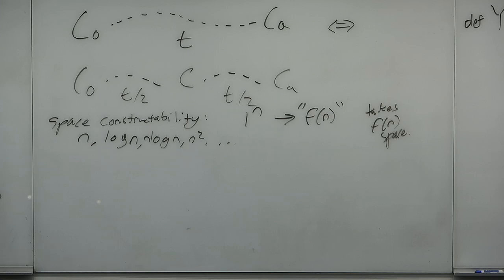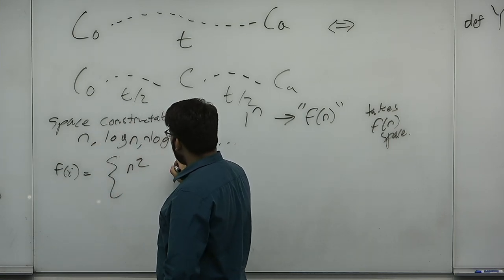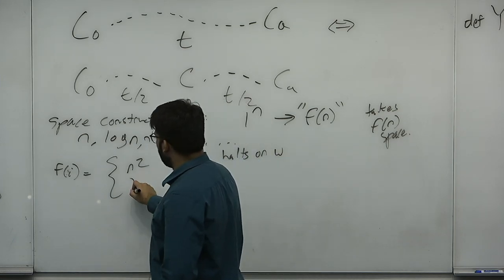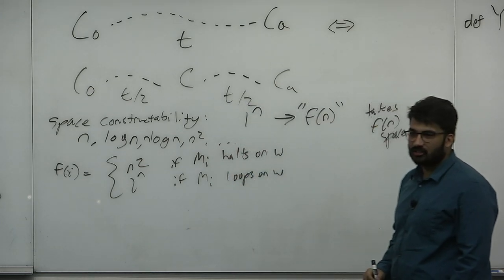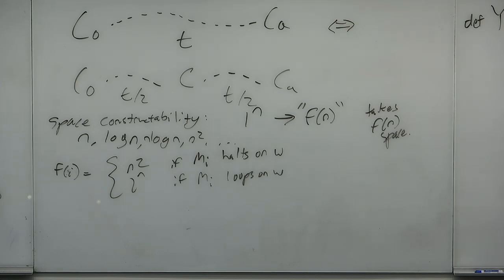You can construct weird non-space-constructable functions — for example, f(i) = n² if M_i halts on w, and 2^n if M_i loops on w. That's an uncomputable function; if you give a machine that as a space bound, you don't know what to do with it. Space constructability is a bare minimum requirement. The second restriction is a lower bound on f.